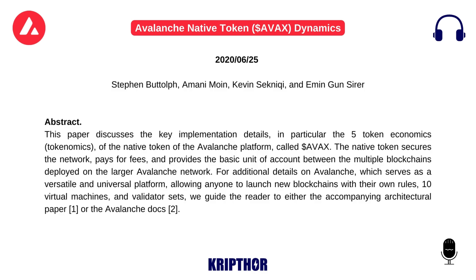Abstract. This paper discusses the key implementation details, in particular the token economics — tokenomics — of the native token of the Avalanche platform, called AVAX. The native token secures the network, pays for fees, and provides the basic unit of account between the multiple blockchains deployed on the larger Avalanche network.